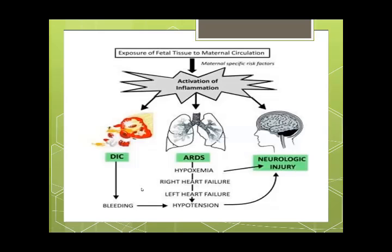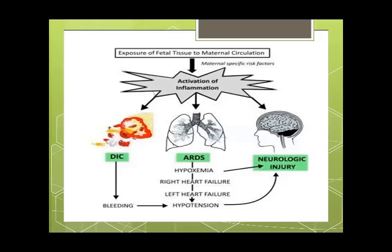Exposure of fetal tissue to maternal circulation leads to activation of inflammation. The first response resembles adult respiratory distress syndrome, leading to hypoxemia, right heart failure, left heart failure, and hypotension. This hypotension causes neurological injury. The other cascade is disseminated intravascular coagulation (DIC), which leads to bleeding, further aggravating hypotension and completing a vicious circle. The first response is mainly pulmonary, followed by the cardiovascular response.